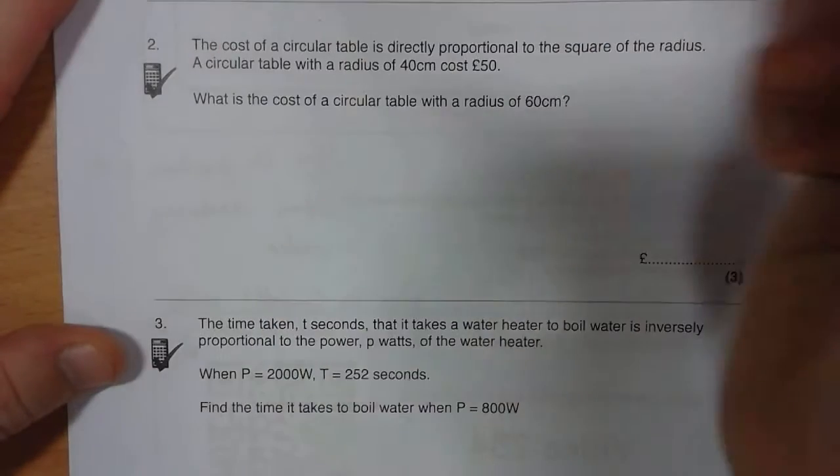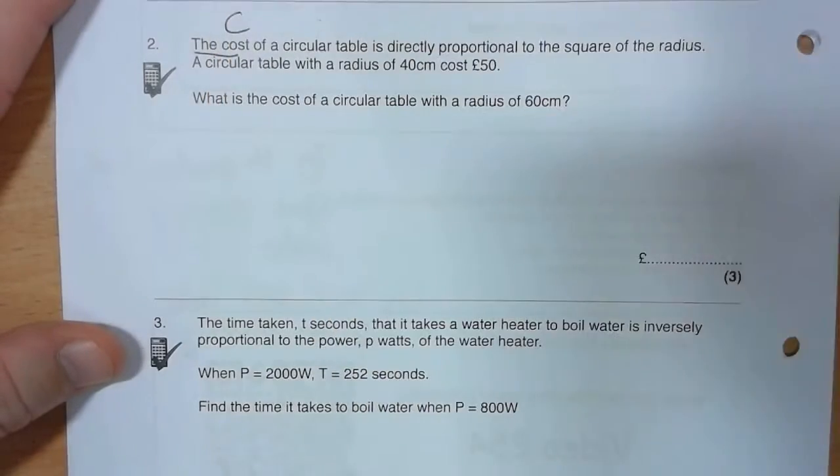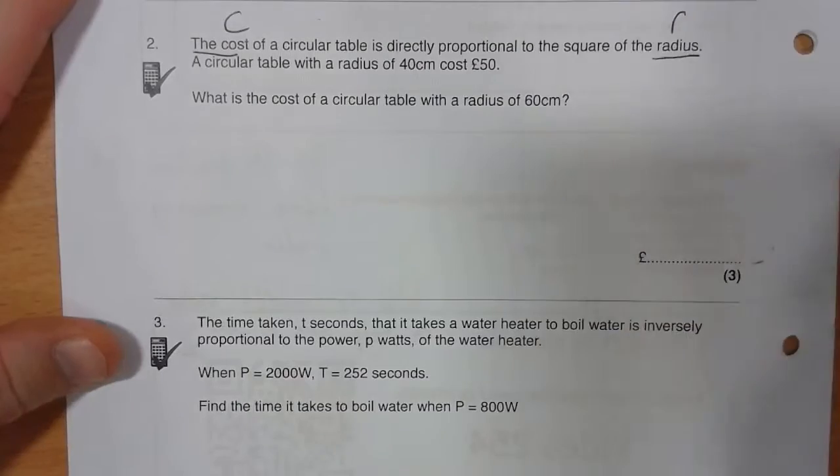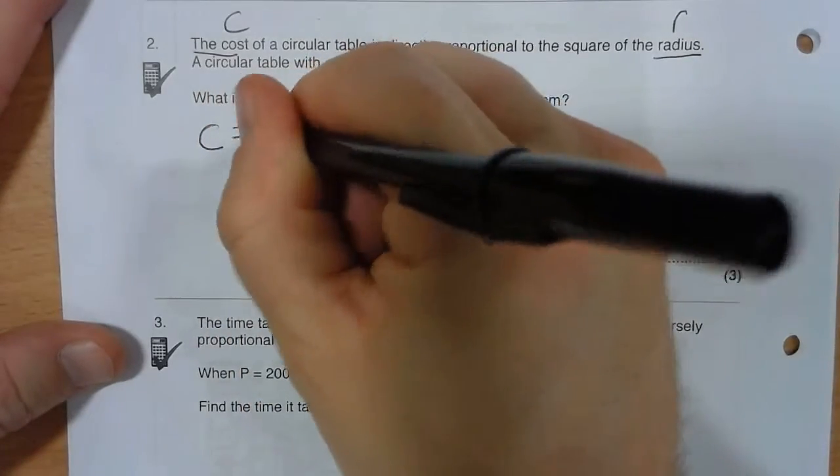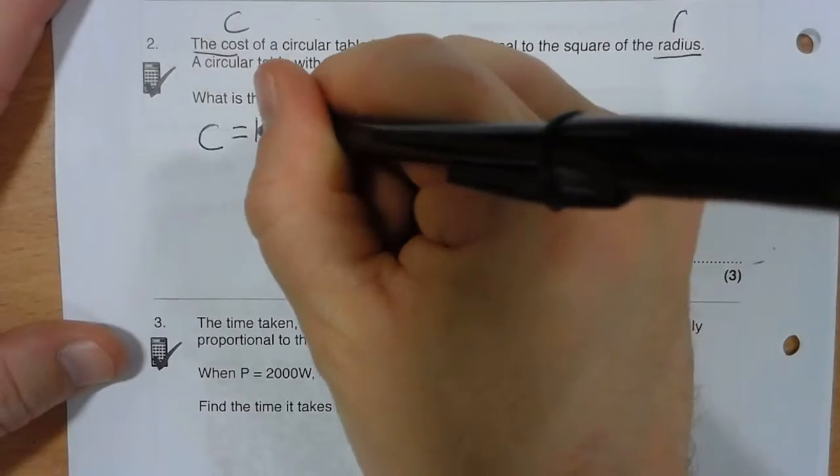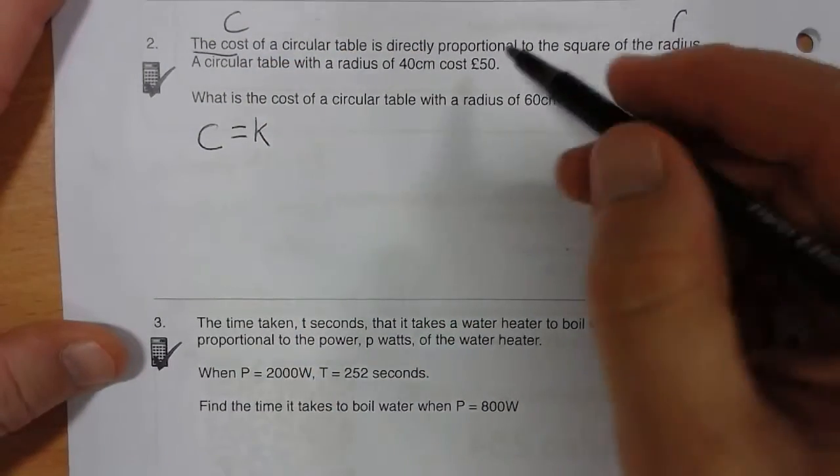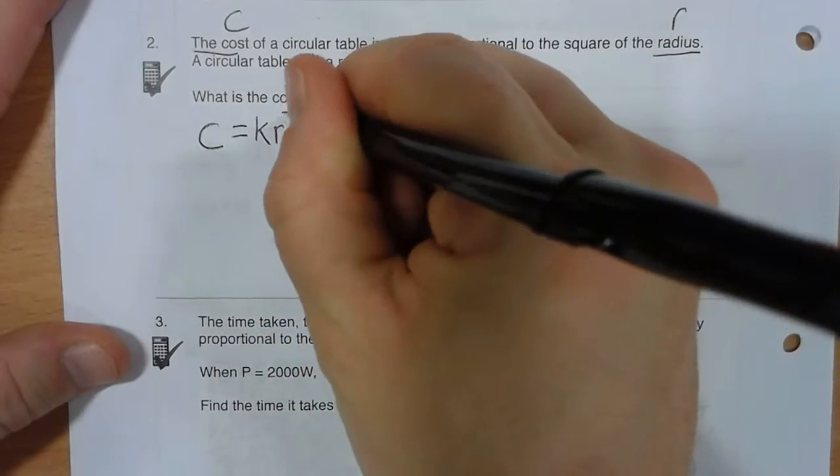So I'm going to set this up. The cost, let's call that C, is directly proportional to the square of the radius, I'm going to call that R. So my cost equals my constant of proportionality - it's directly proportional - so I've got the constant of proportionality and it's proportional to the square of the radius, to the radius squared.